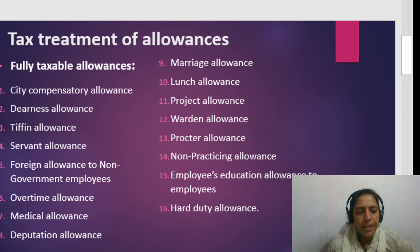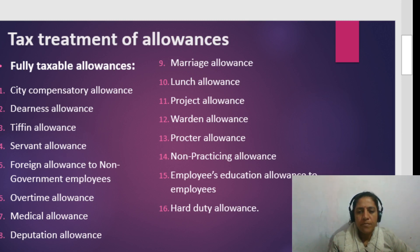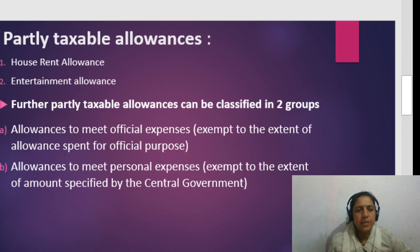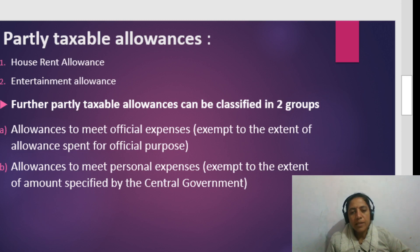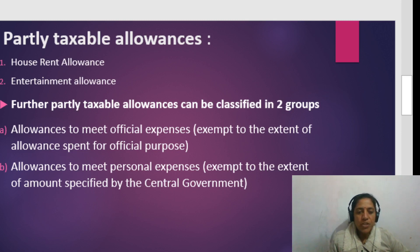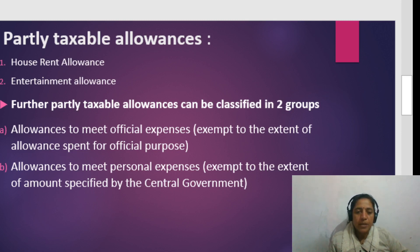Next, let us see partly taxable allowances. Partly taxable allowances include house rent allowance and entertainment allowance. For allowances to meet official expenses, the amount is exempt to the extent of the allowance actually spent for official purposes. Any savings beyond that are taxable.